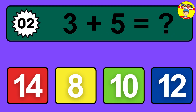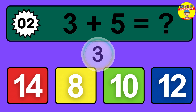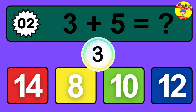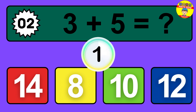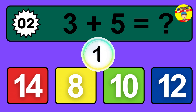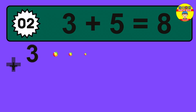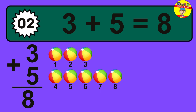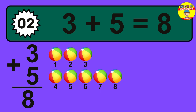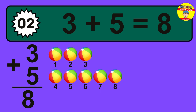Question 2. 3 plus 5 equals what? The answer is 3 plus 5 is 8. Let's count it.